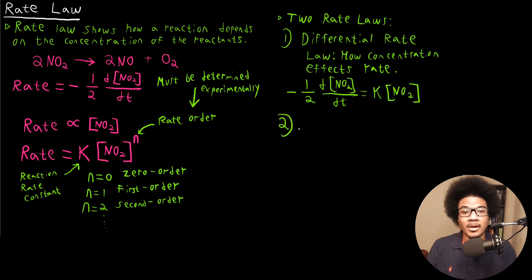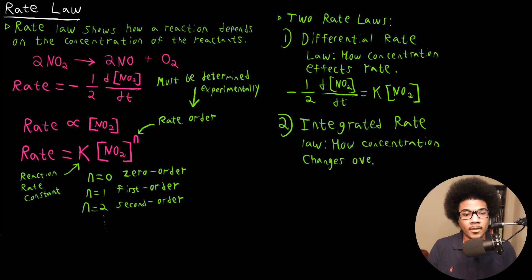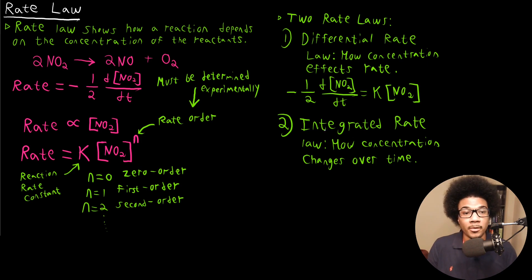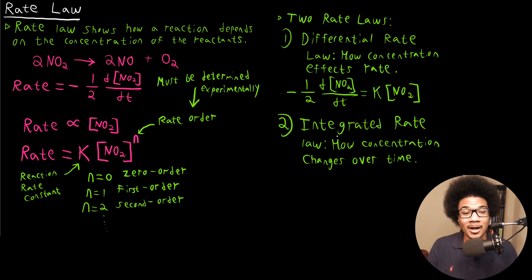If we have a differential rate law, then we also have an integrated rate law. The integrated rate law shows how the concentration changes over time. For my mathematically inclined people, the integrated rate law is just integrating both sides of this differential equation with respect to time. That's not something you would be responsible for at the general chemistry level, but as far as your understanding of how calculus seeps into chemistry, this integrated rate law comes from integrating these differential rate laws.